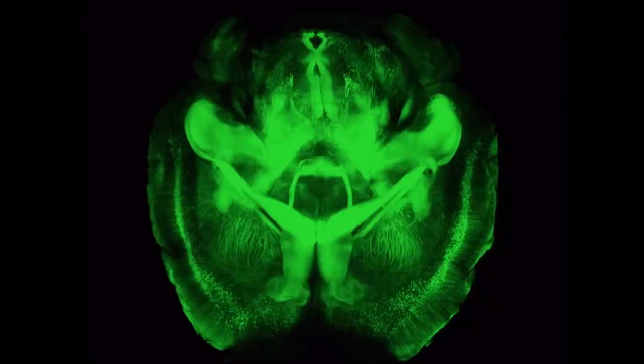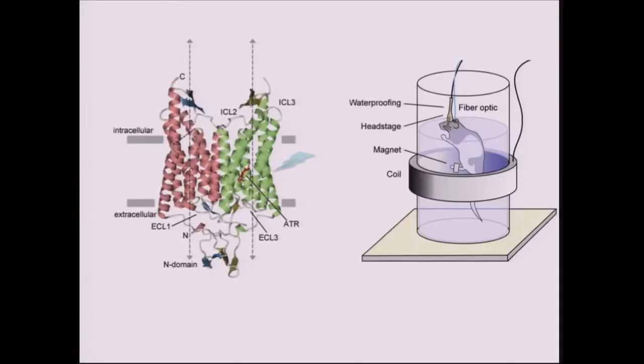One approach we've taken is what we call CLARITY — a way of looking at the intact brain without disassembly, visualizing the three-dimensional arrangements of cells and projections. Another approach is optogenetics, where we introduce a panel of light-activated regulators of transmembrane ion flow into animals, into particular cell types or circuit elements within the brain, and track complex behaviors while exerting this precise control. I'll tell you about the basic technology and recent advances on both fronts, starting with CLARITY.